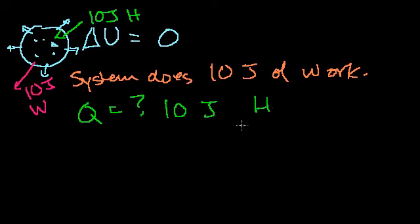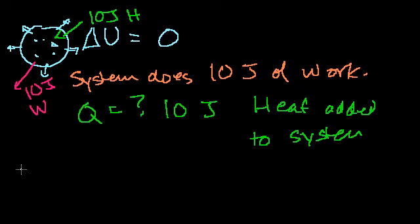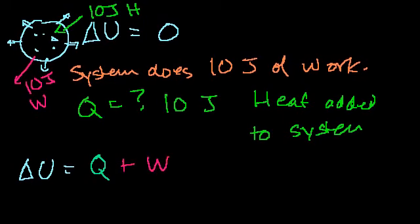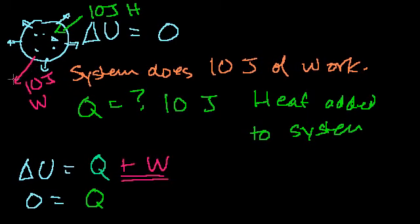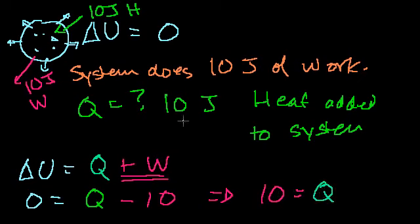Now let's look at that from the point of view of the actual formula. Delta U equals heat added plus work done to the system. Delta U was 0, so: 0 equals Q plus W. The system did work to something else — it didn't have work done to it. So if W is work done to the system, and the system did work, then W is minus 10 joules. Solving both sides: add 10 to both sides and you get 10 equals Q — exactly what we got intuitively.